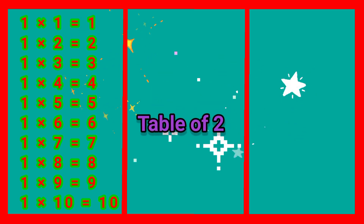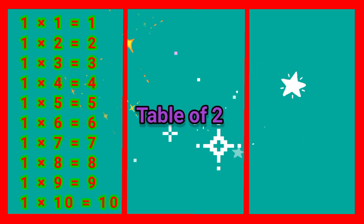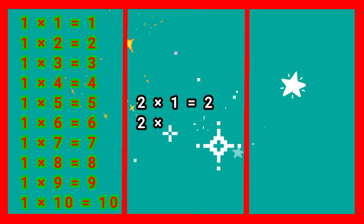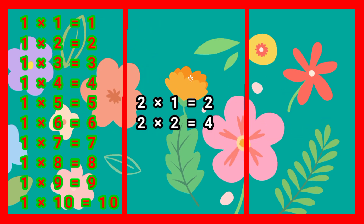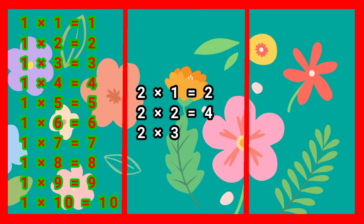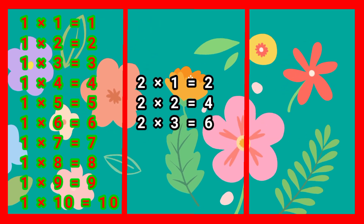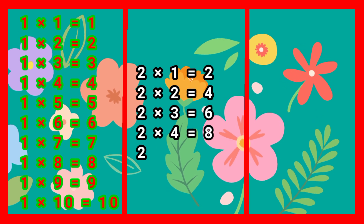Multiplication Table of 2. 2 times 1 jah 2. 2 times 2 jah 4. 2 times 3 jah 6. 2 times 4 jah 8. 2 times 5 jah 10.